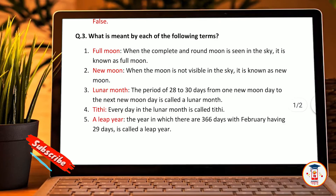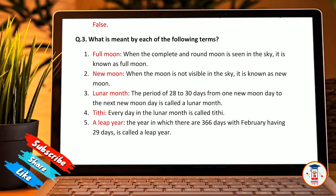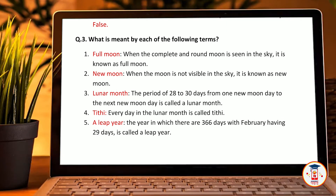What is meant by each of the following terms? Full moon: when the complete and round moon is seen in the sky, it is known as full moon. New moon: when the moon is not visible in the sky, it is known as a new moon. Lunar month: the period of 28 to 30 days from one new moon to the next new moon is called a lunar month.